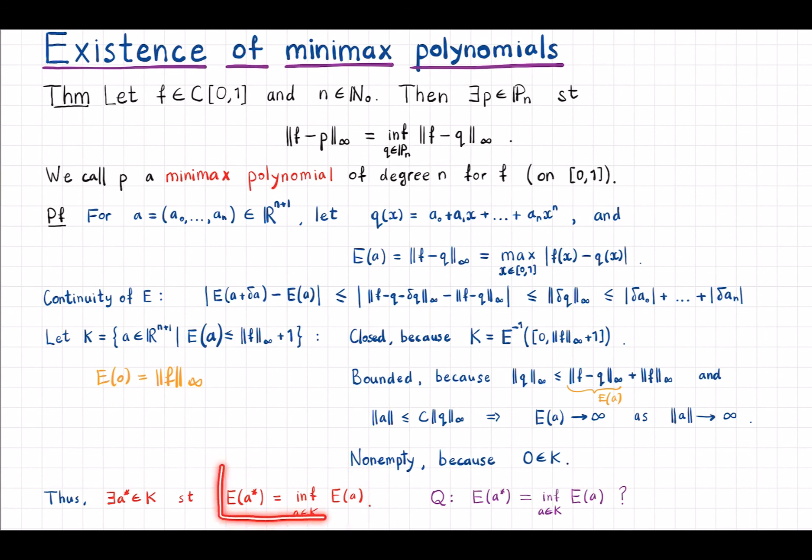So there's just one step left here. We only proved now that it has a minimizer over the set K, but we want to have the minimizer over the whole space R^(n+1). So the question is now, is it a minimizer over the whole space?